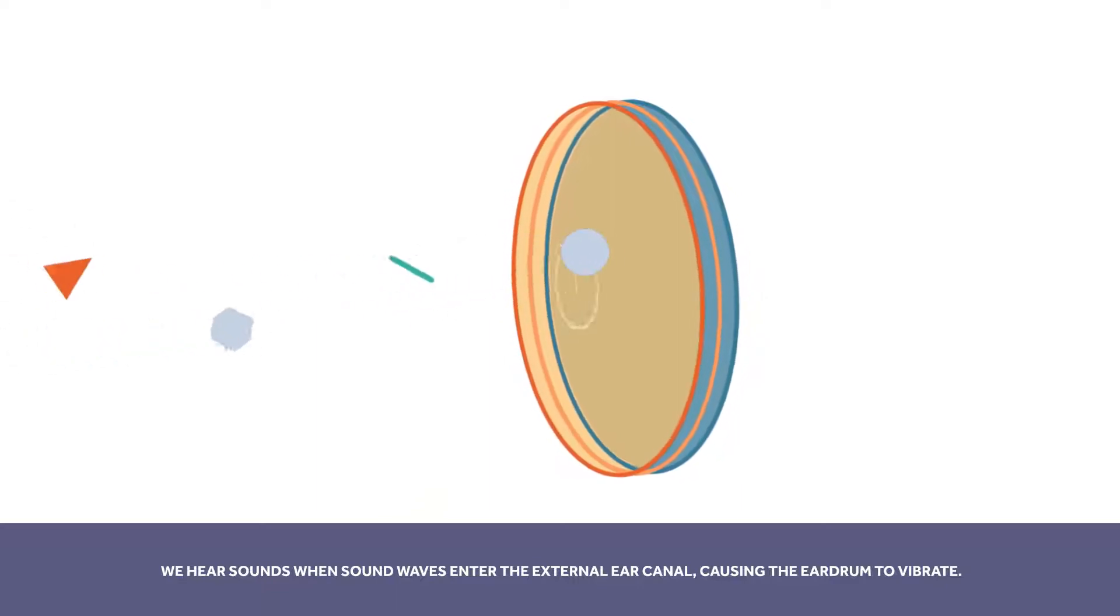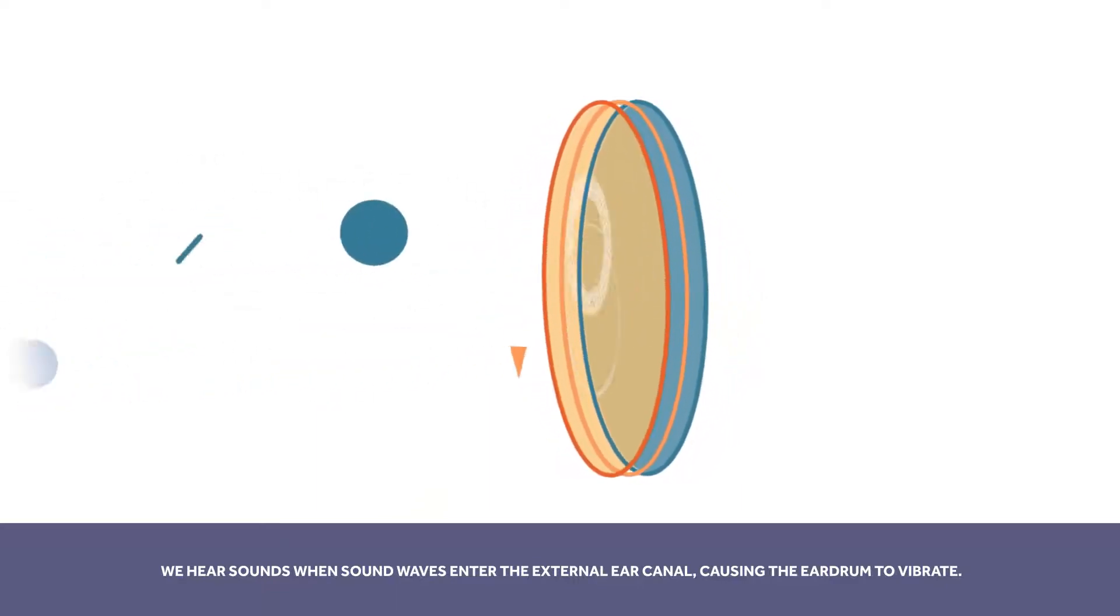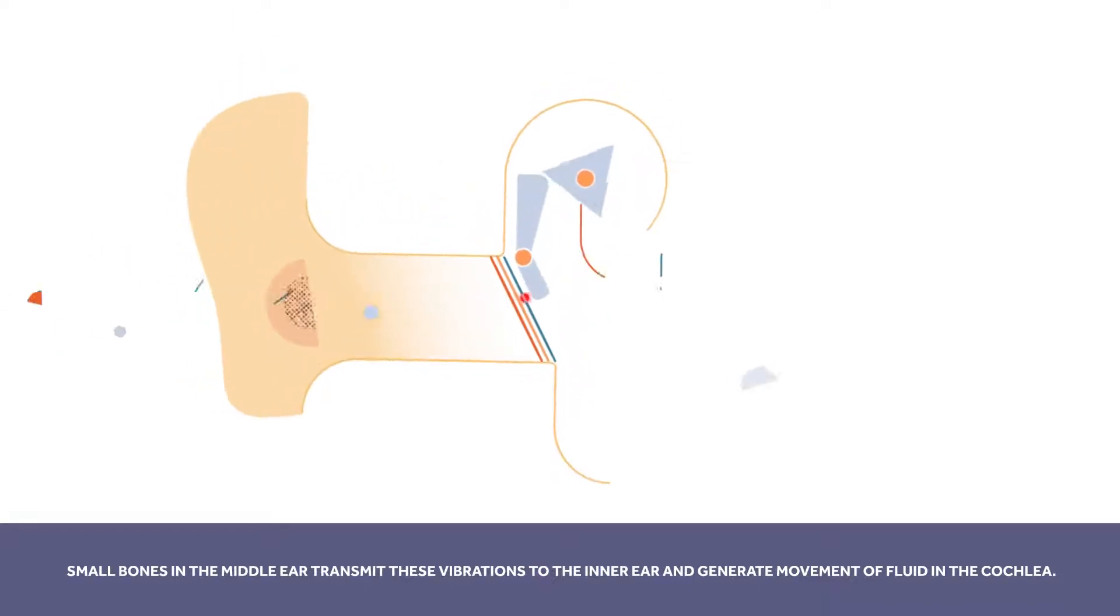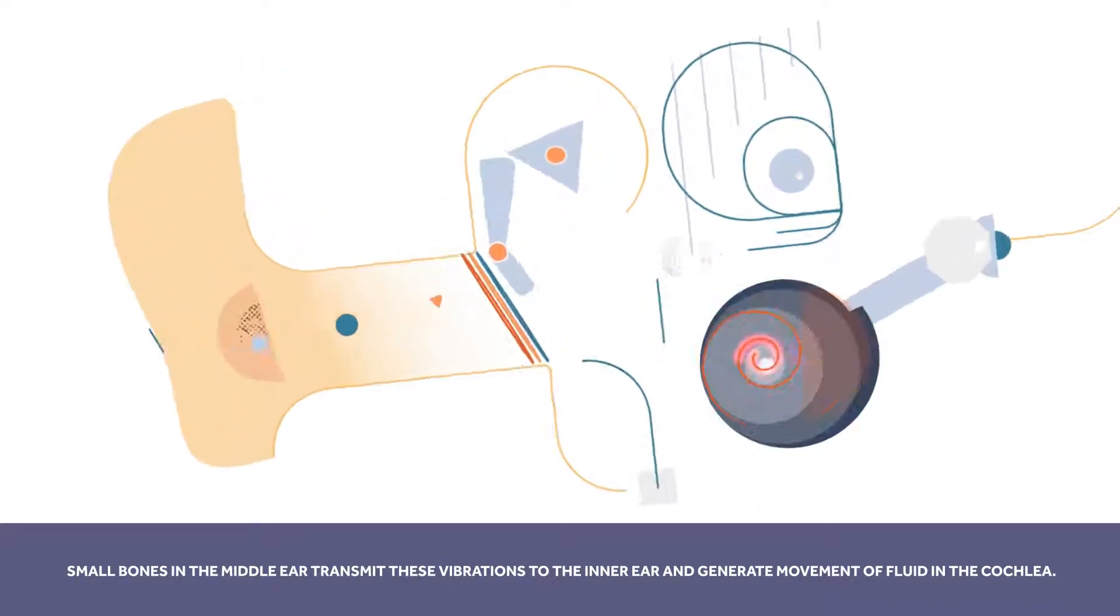We hear sounds when sound waves enter the external ear canal, causing the eardrum to vibrate. Small bones in the middle ear transmit these vibrations to the inner ear and generate movement of fluid in the cochlea.